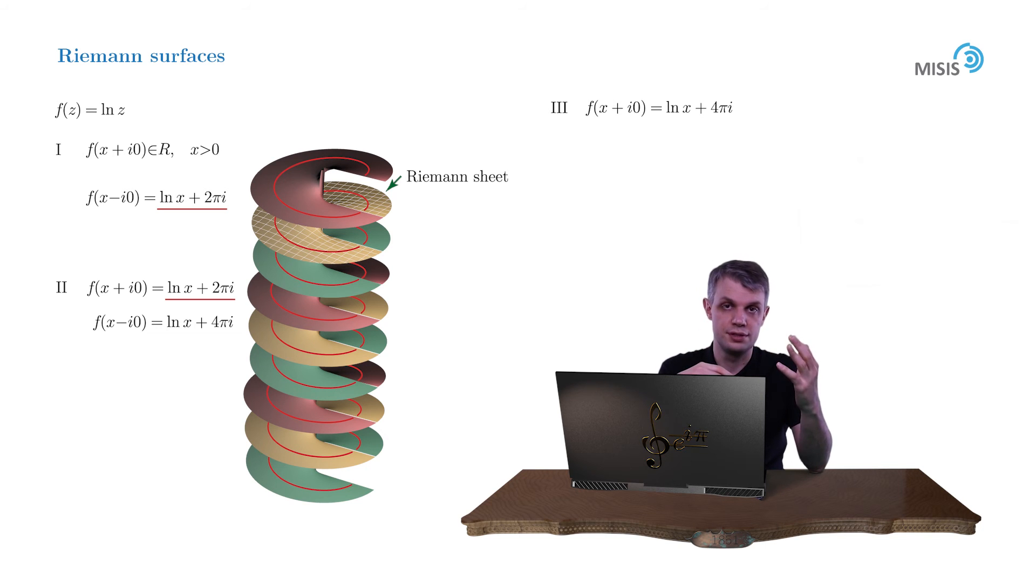Each sheet of this construction is reserved for a particular regular branch of our multivalued function. And that was Riemann's idea. He turned a multivalued function into a single-valued function, but at the price of turning a complex plane into a two-dimensional nontrivial topological manifold in three-dimensional space.